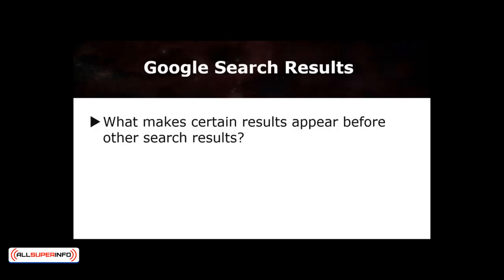Have you ever wondered about the Google search results provided for you? What makes certain results appear before any other search results? In fact, thousands of us are scrolling through that first page of Google search results. Most of us won't bother clicking the very next page of that result. That would be search engine optimization, also known as SEO.